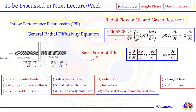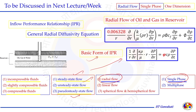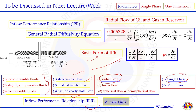We now have the inflow performance relationship for radial flow of oil and gas in the reservoir, and the general radial diffusivity equation. Both are essentially the same but in different forms. In the next lecture we will start with the basic form of the IPR for single phase radial flow and get expressions for incompressible, slightly compressible, and compressible fluid for different flow regimes — steady state, pseudo steady state, and unsteady state. The IPR equation will also be modified to account for skin effect near the wellbore and non-Darcy effects.